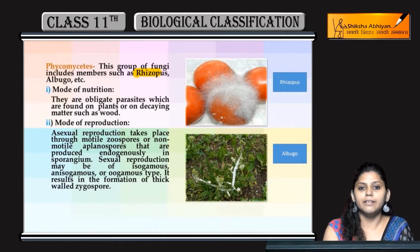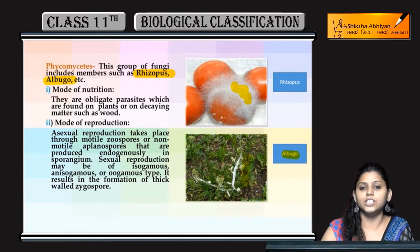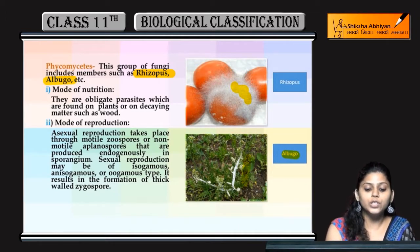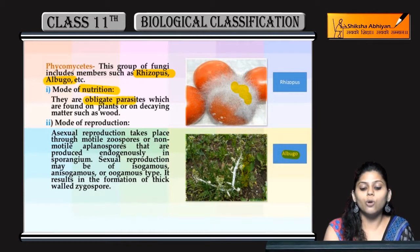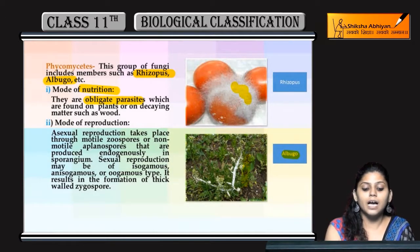Phycomycetes ke examples hain Rhizopus and Albugo. Aap slide mein dekh sakti hain Rhizopus grow ki hai tomato mein and Albugo niche wali figure mein. In ka mode of nutrition: Phycomycetes obligate parasites hote hain — woh kisi aur organism pe rehke unse nutrition lete hain.